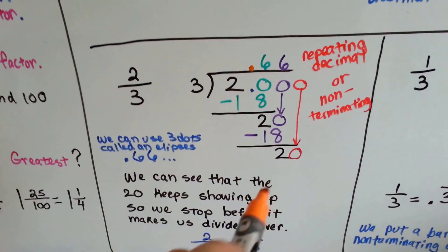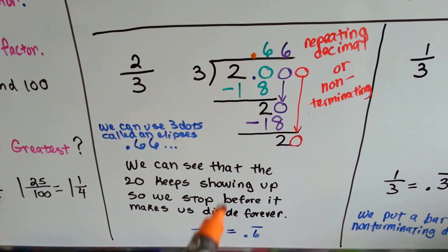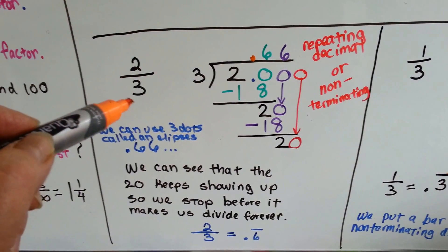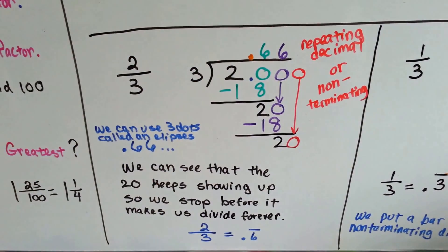That's a non-terminating decimal, where the twenty just keeps showing up, so we just stop before it makes us divide forever. So we know that two-thirds is equal to .66666666.